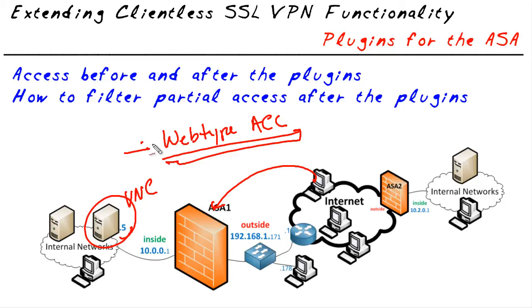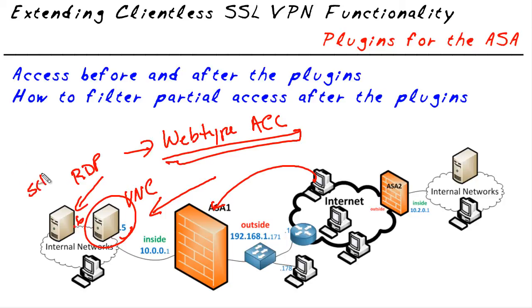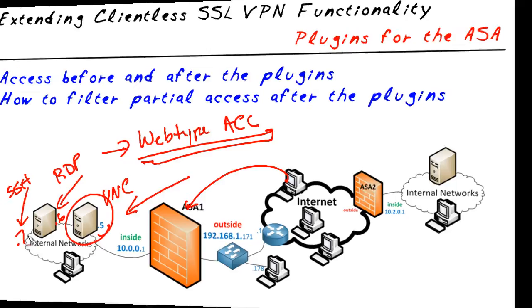By using a web type ACL and applying it to that user or to his group, we could specifically say we want you only to be able to access VNC to this address at dot five, or maybe remote desktop protocol to this IP address of dot six, or maybe SSH to another address of dot seven. And just like any other access list, at the end of this web ACL there's an implied deny. So we can be very specific on what resources the user can access while the VPN tunnel is up.